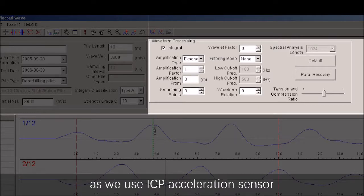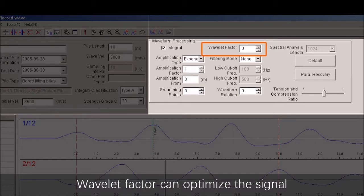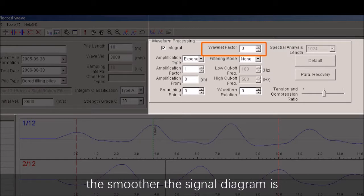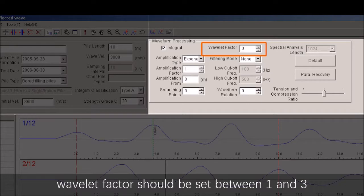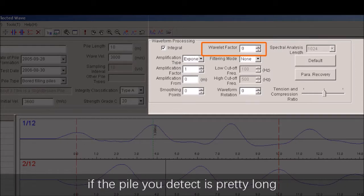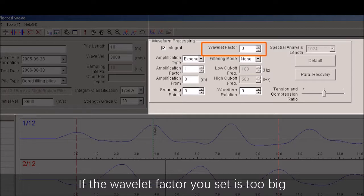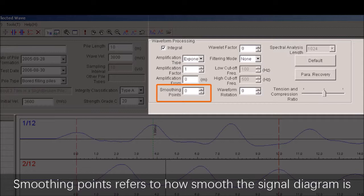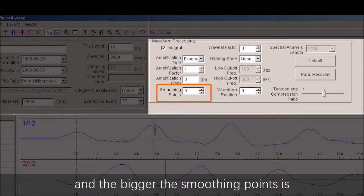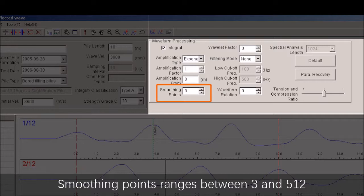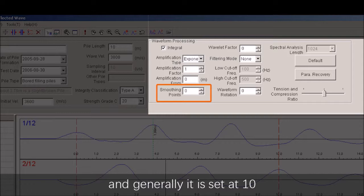You can further improve or modify the pile's information in the pile information area on the left side. Look at the waveform processing area on the right side. You should choose integral as we use an ICP acceleration sensor. Wavelet factor can optimize the signals for further analysis. The bigger the wavelet factor is, the smoother the signal diagram is. Generally, the wavelet factor should be set between 1 and 3, but you can set a bigger wavelet factor if the pile you detect is pretty long. If the wavelet factor you set is too big, some useful signals will be filtered out, causing misjudgment.